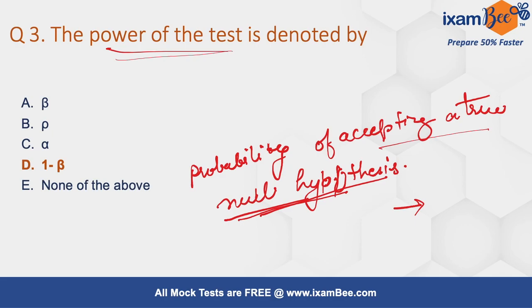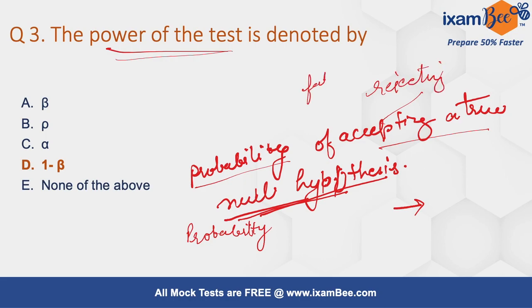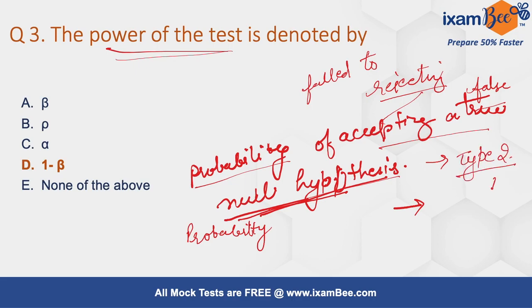Now, the probability of failing to reject a false null hypothesis is actually Type 2 error, and Type 2 error is denoted by beta. So the power of a test — accepting a true null hypothesis — is denoted by 1 minus beta.